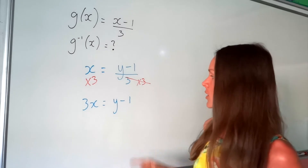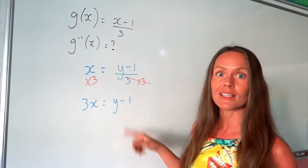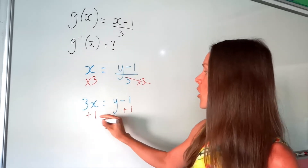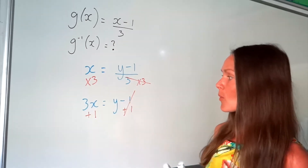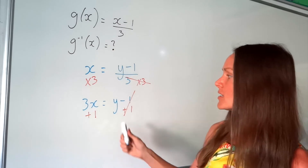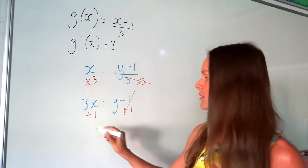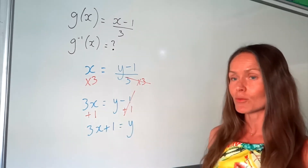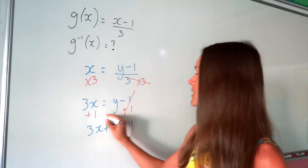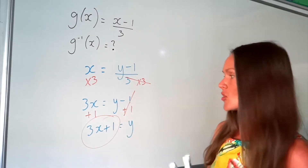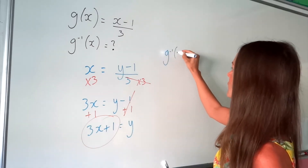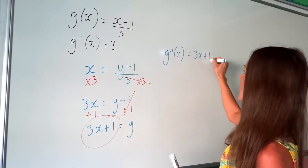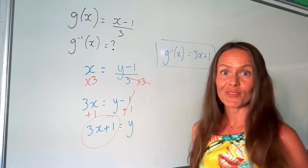We've got one last step. The opposite of subtracting 1 is to plus 1. So if I add 1 to both sides, on the right-hand side they cancel, and I'm left with y. And on the left-hand side, I've now got 3x plus 1. So we've finished — we've rearranged to make y the subject of the formula. Remember, it's this part that's the answer. So if you're asked to work out the inverse of g of x, you would write down 3x plus 1.